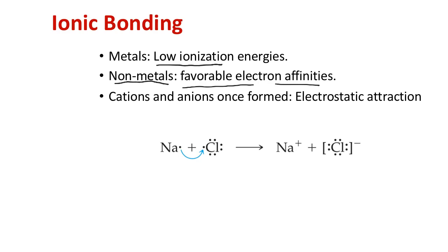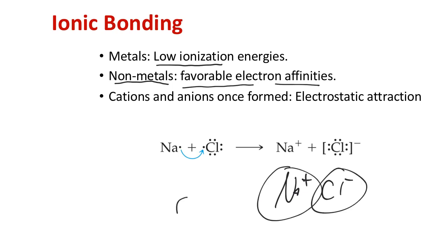That alone isn't energetically sufficient to produce gaseous ions floating away. Instead, NaCl forms where, once the ions form, we get their electrostatic attraction — the benefit of Q1·Q2/d as they stick together and form an ionic solid. So NaCl forms not just because of sodium losing an electron and chloride absorbing it, but because the plus and minus ions then attract electrostatically, releasing energy.